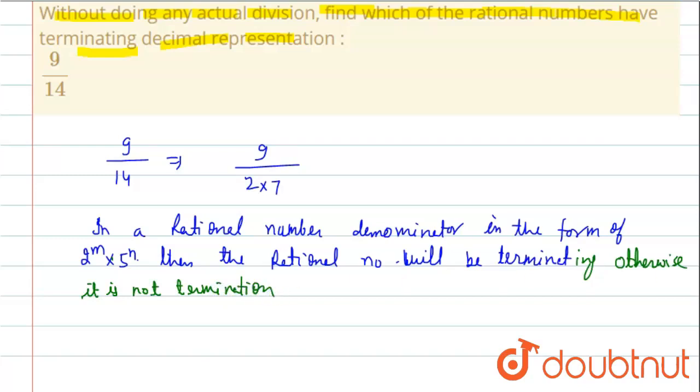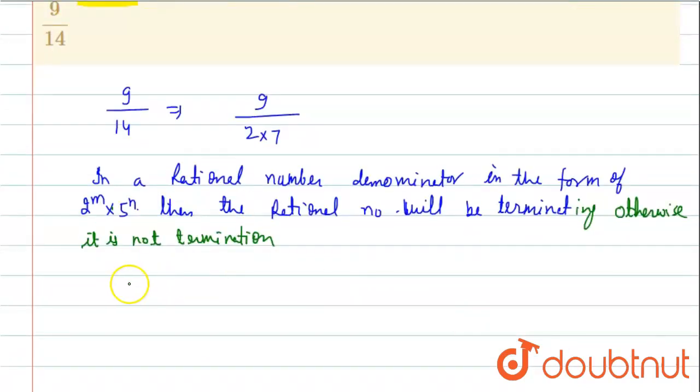So given expression, this is 9 by 2 into 7. Now, this denominator